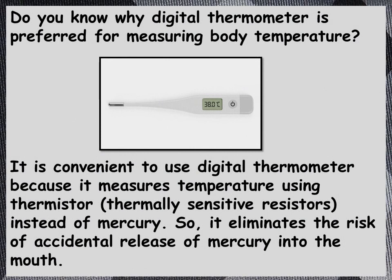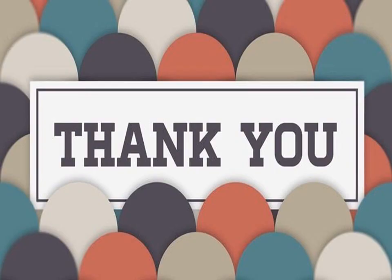Do you know why digital thermometers are preferred these days for measuring body temperature? It is convenient to use digital thermometers because they measure temperature by using a thermistor instead of mercury. Thermistors are thermally sensitive resistors, so it eliminates the risk of accidental release of mercury into the mouth.